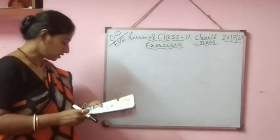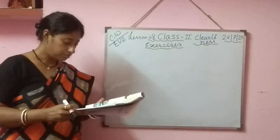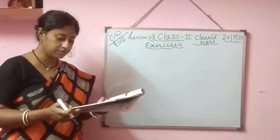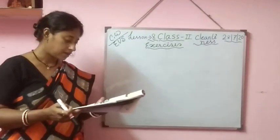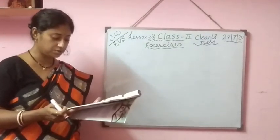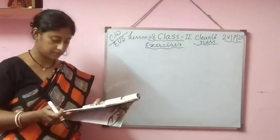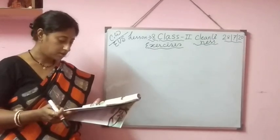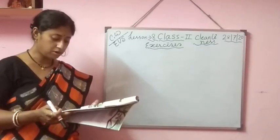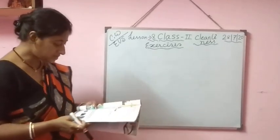Today, number B. Write W for things that should be cleaned with water. Write D for things that should be cleaned with dry dust. W for water, D for dry dust. There are many pictures.